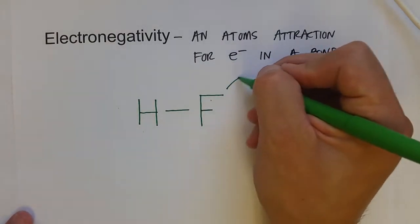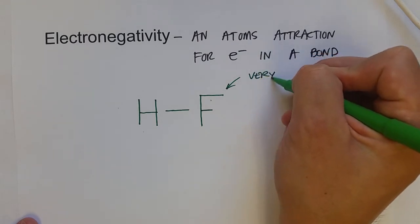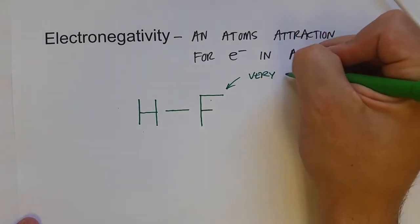Fluorine is very electronegative. In fact, it is the most electronegative atom on the periodic table.